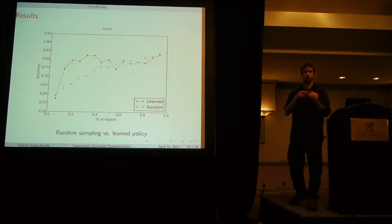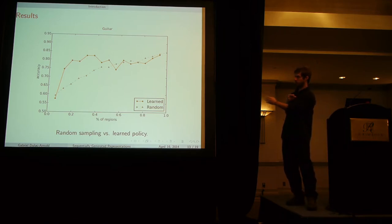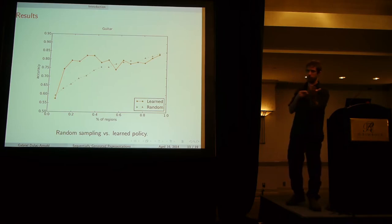Here's kind of a nice example of how it can work. Obviously, this is one of the nicer ones. It's never worse, but sometimes it's just closer. What we can see here is, on the bottom, we have the percentage of regions, so in terms of 16, so half would be 8, and the accuracy on the left.